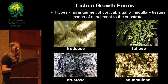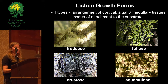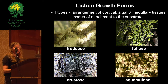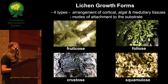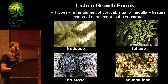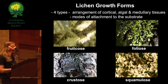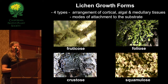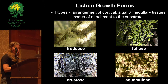There are four types of lichen growth forms, based on the arrangement of cortical, algal, and medullary tissues as well as their modes of attachment to the substrate. The first is fruticose — a three-dimensional lichen that hangs down and dangles. Foliose lichens have a two-dimensional structure with a clear upper and lower surface. Crustose lichens are also two-dimensional but pressed to the substrate and cannot be removed without also removing the substrate. The last is squamulose, which is intermediate between foliose and crustose.